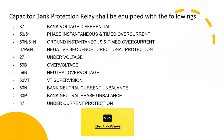Capacitor bank protection relay shall be equipped with the following: 87 bank voltage differential; 50, 51 phase instantaneous and timed over current; 50N, 51N ground instantaneous and timed over current; 67P and N negative sequence directional protection.